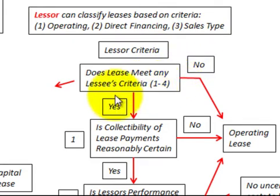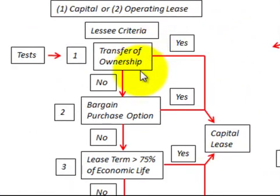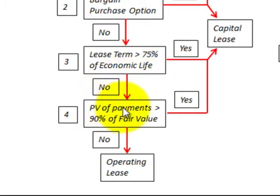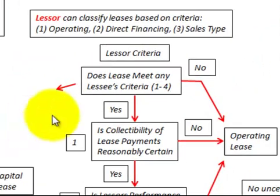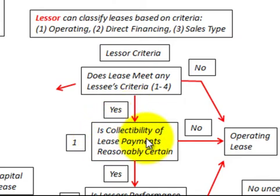We have the same decision diagram for the lessor — yes proceeds to the next step, no determines the lease type. The first question for the lessor is: does it meet any of the lessee's criteria? That means we go back and ask: does it have a transfer of ownership, a bargain purchase option, a lease term greater than 75% of the economic life, or a present value of payments greater than 90% of the fair value? If it meets one or more of those criteria, we proceed to the next criteria. If it meets none, it's automatically an operating lease.